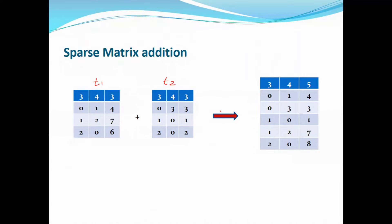This is the sum of the resultant matrix. That is, the sum of this matrix is also a tuple matrix. So, if we consider a row number, then we will consider a column number.